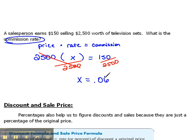But remember, we're asking for the rate, which is a percentage. So, once we have our answer, now we actually need to change that into percent form. So, moving our decimal over two places, we get a commission rate of 6%. That really is saying $150 is 6% of $2,500,